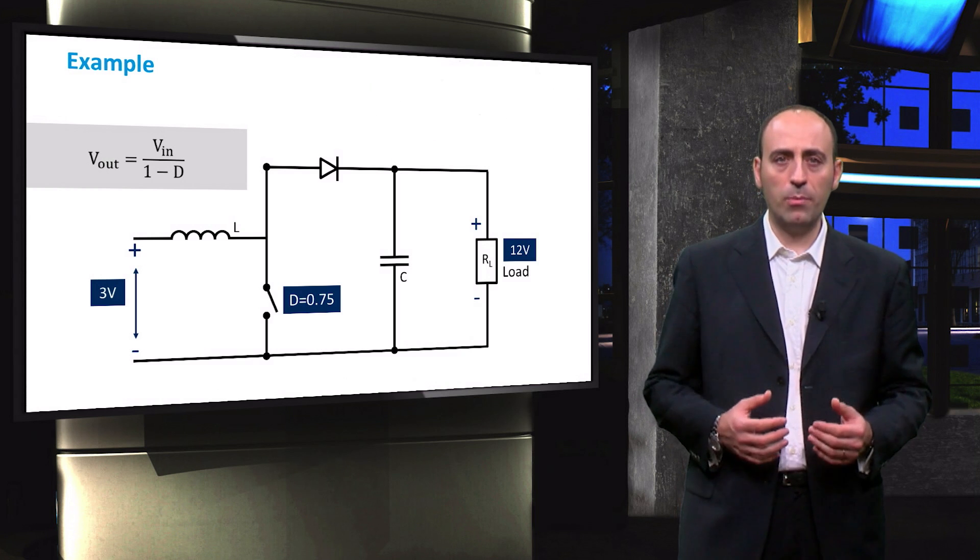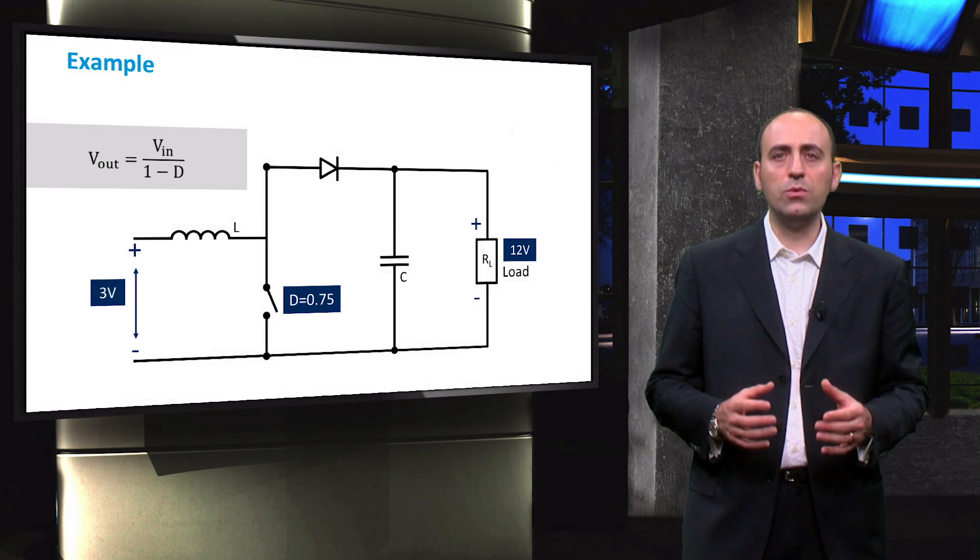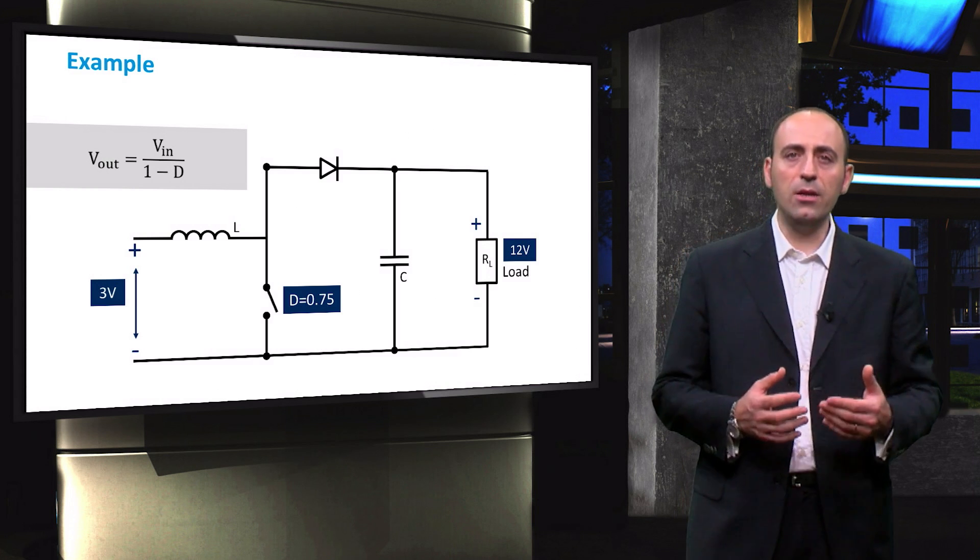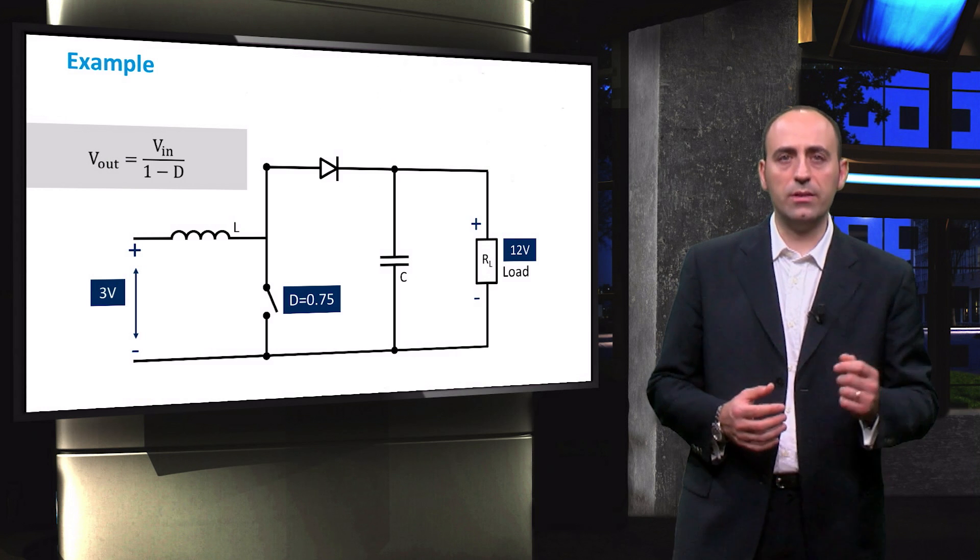So in a real maximum power point tracker, the suitable duty cycle is computed according to its algorithm, and an input to the DC-DC converter is sent.